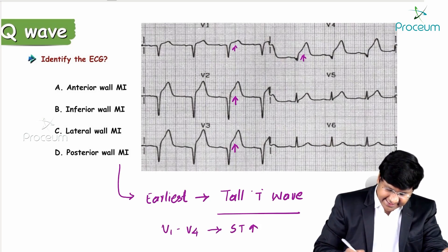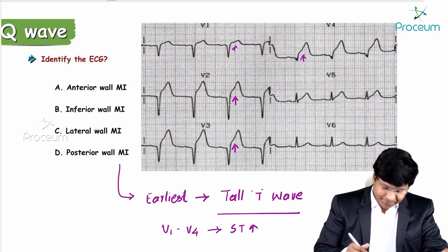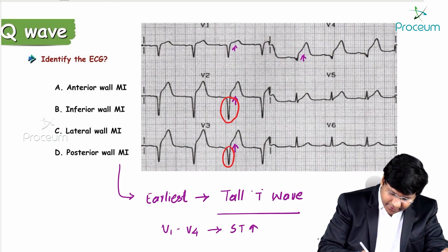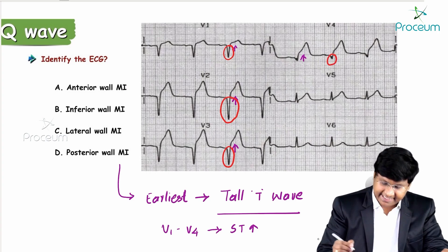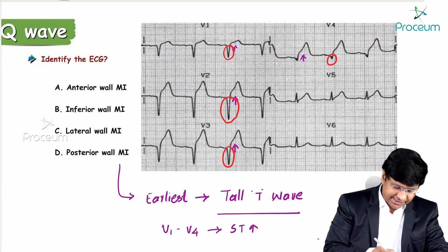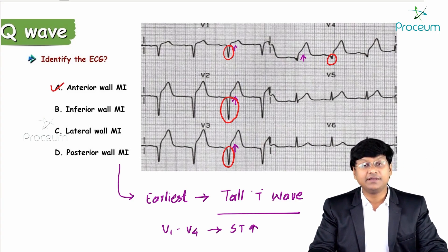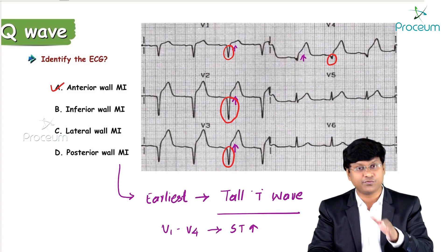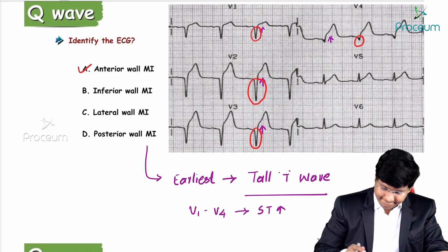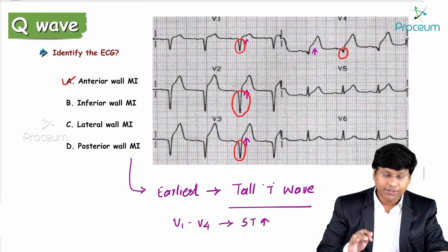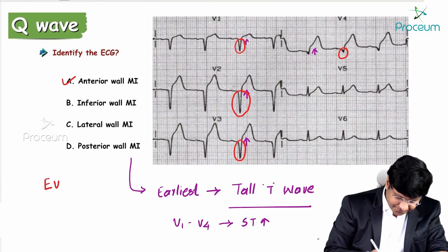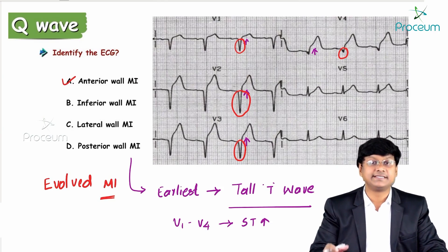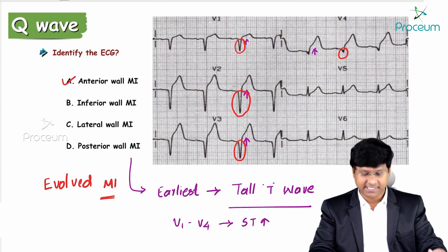ST segment elevation is seen from V1 to V4, and the individual also has deep pathological Q waves in the anterior leads. This ECG is suggestive of anterior wall MI. By the time the Q wave is formed, we call it evolved MI, meaning the individual has a transmural myocardial infarction.